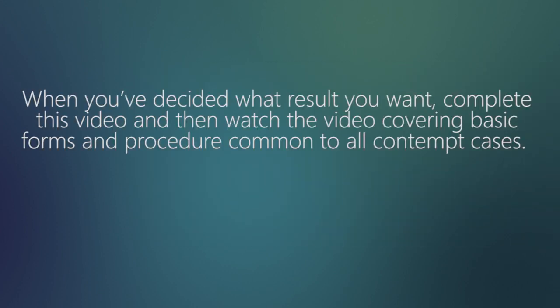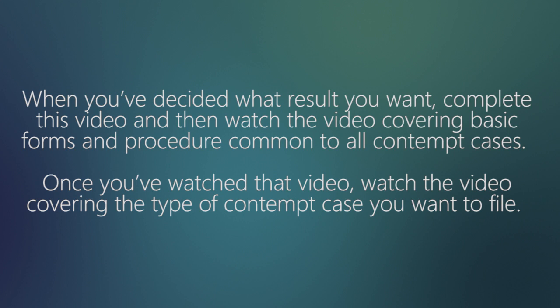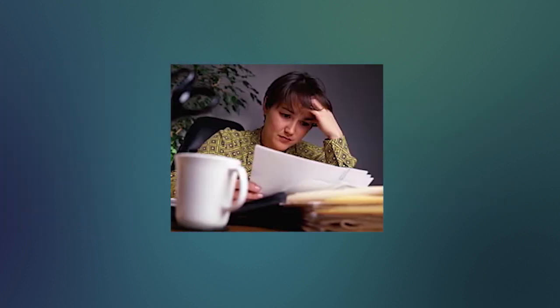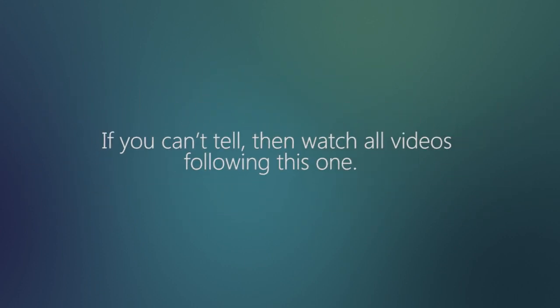When you've decided what result you want, complete this video and then watch the video covering basic forms and procedures common to all contempt cases. Once you've watched that video, watch the video covering the type of contempt case you want to file. If you are being sued for contempt, read through the paperwork and understand what the other person is asking for — a remedy, punishment, or both. If you can't tell, then watch all videos following this one.